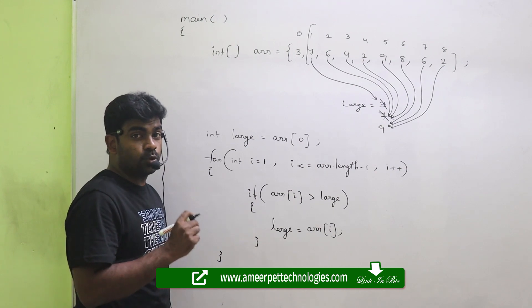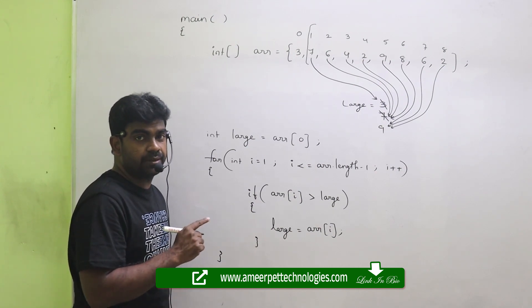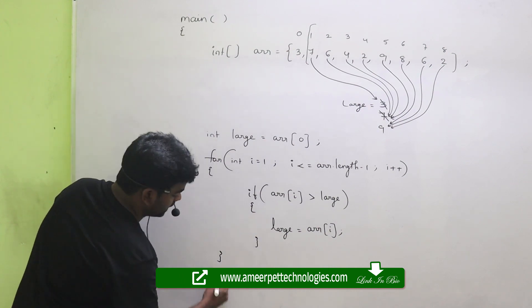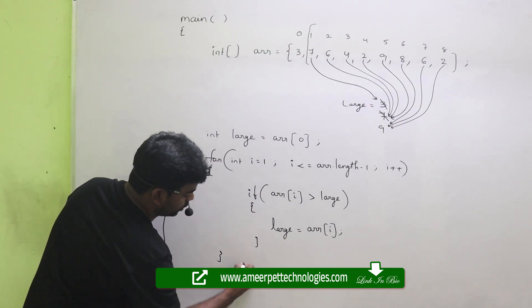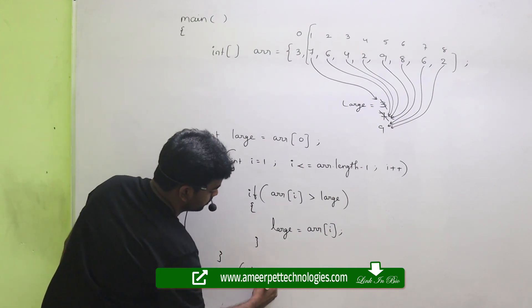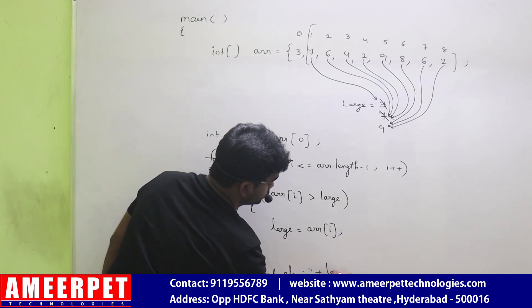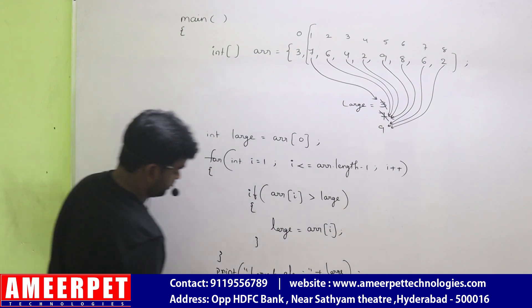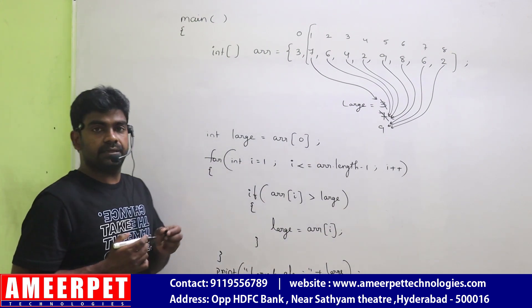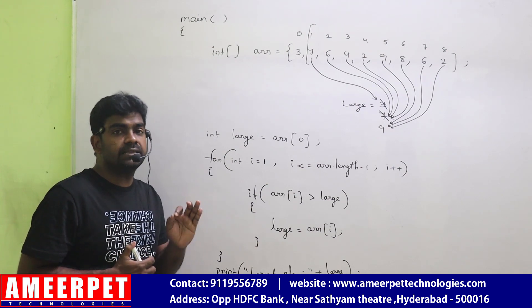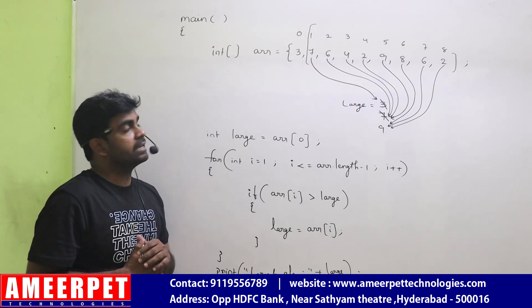Finally, please don't print the large inside, because here only we are just calculating. Outside we are printing system.out.println. The largest element is that large we are printing. This is the simple way to display the largest element in the given array.